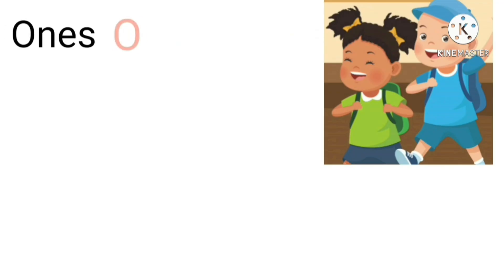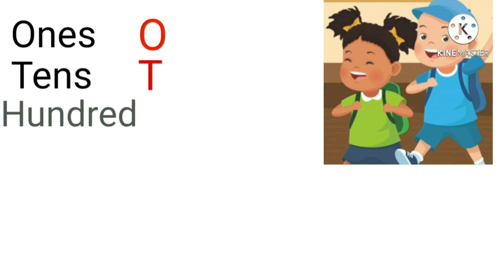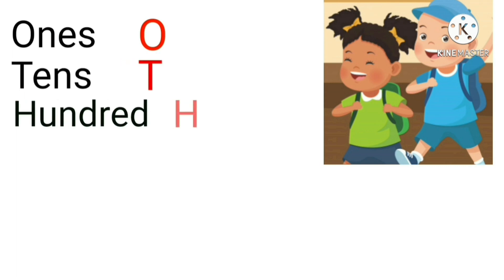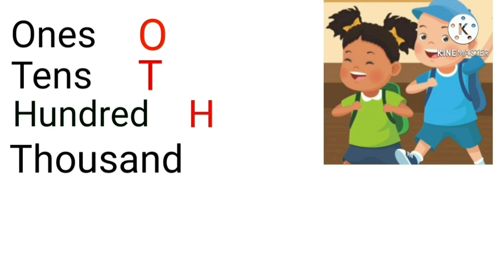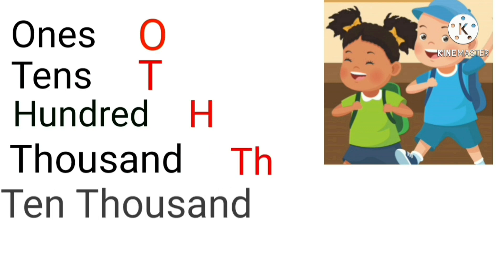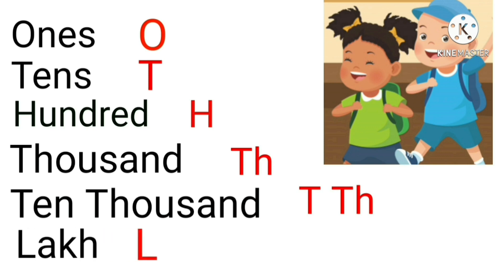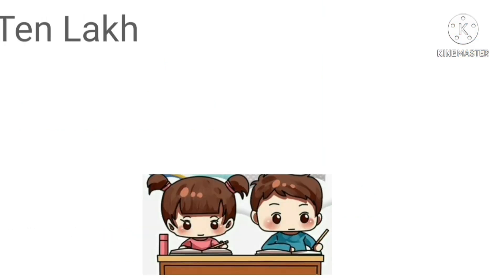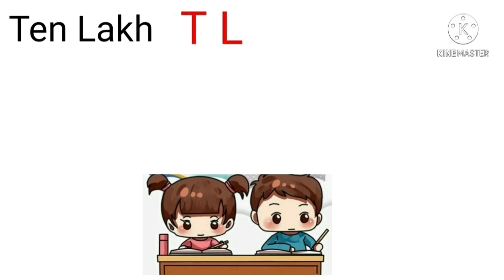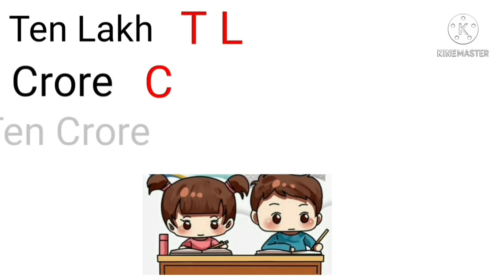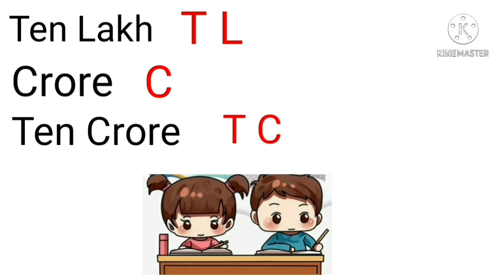For ones, we use the letter O. For tens, letter T. For hundred, the letter H. For thousand, we use TH. For ten thousand, we use TTH. And for lakh, we use the symbol L. Similarly, we use TL for ten lakh, letter C for crore, and TC for ten crore.